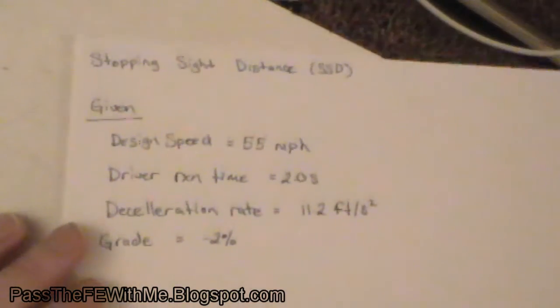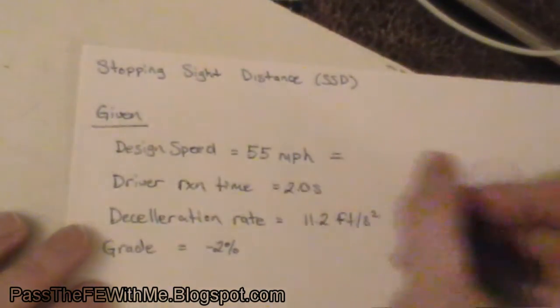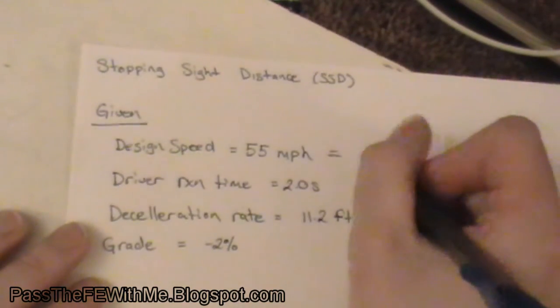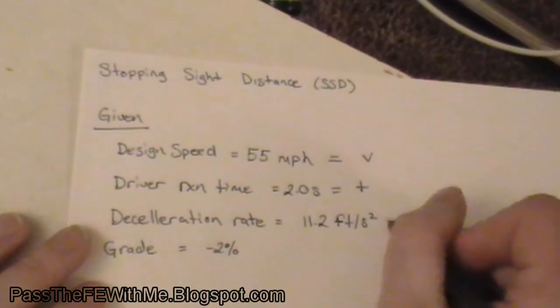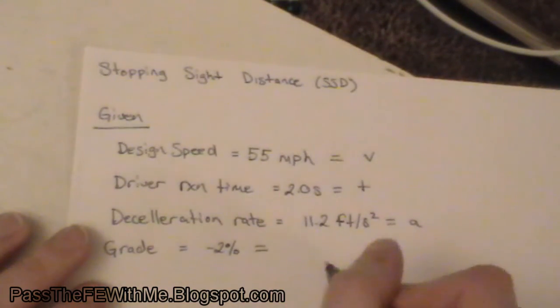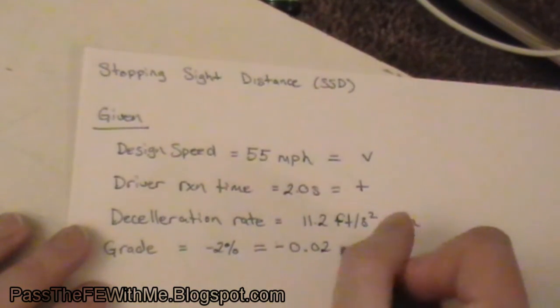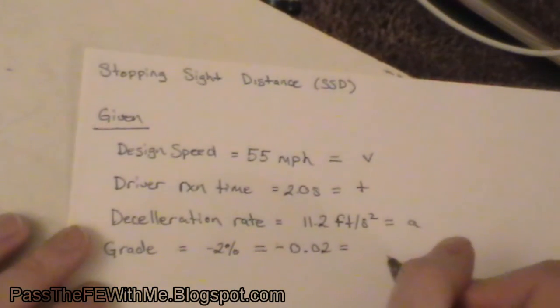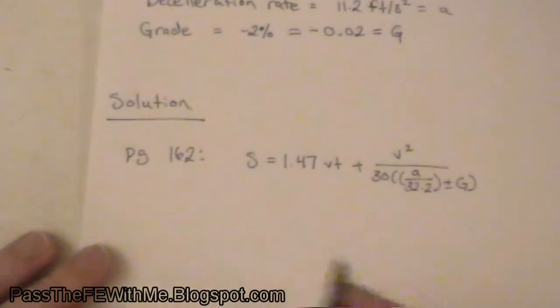So we have this equation. We can go back up here and start assigning our variables. So design speed is V, driver reaction time is T, deceleration rate is A, grade equals, and this is actually going to be minus 0.02 because it's a percent, equals capital G. Alright, so let's just get into it.